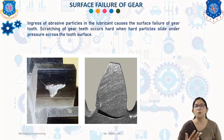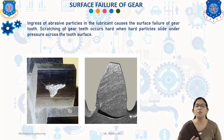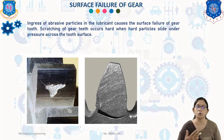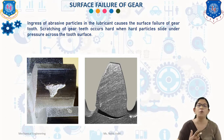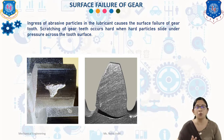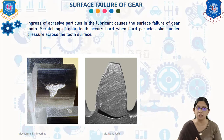Ingress of abrasive particles in the lubricant causes surface failure of the gear tooth. Scratching of gear teeth occurs when hard particles slide under pressure across the tooth surface. Surface failure is very important for the gear tooth. In the absence of an appropriate lubricant, there is a possibility of overheating of the gear tooth in machine condition.